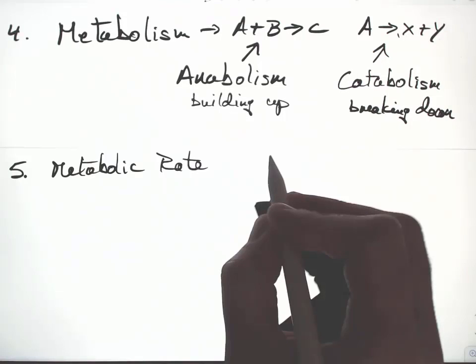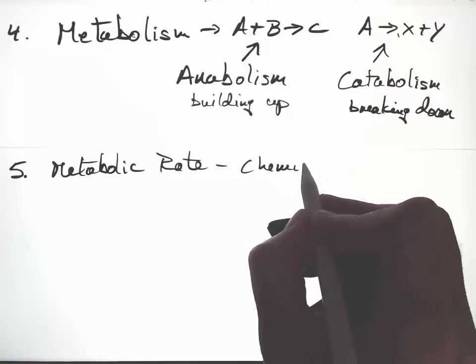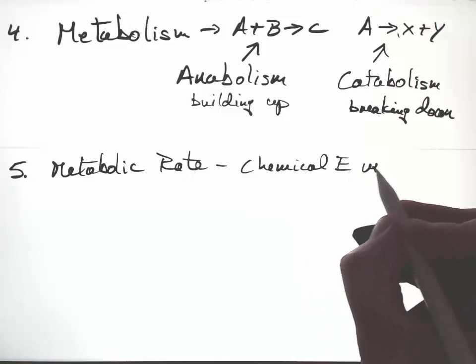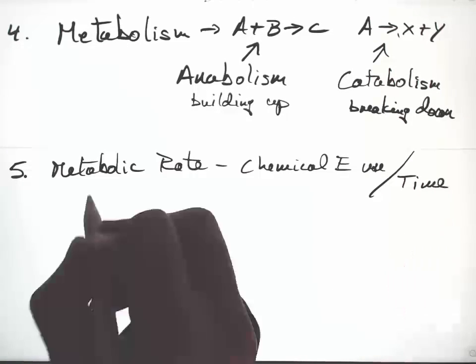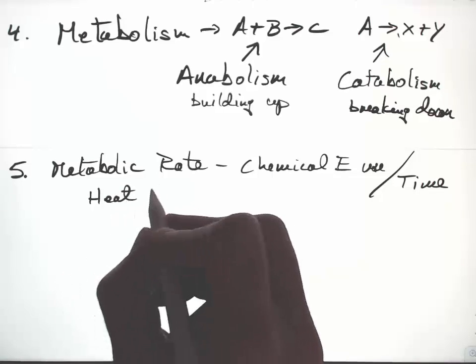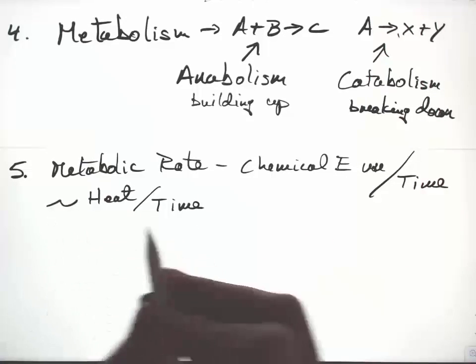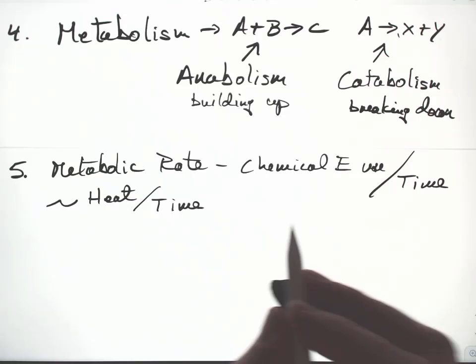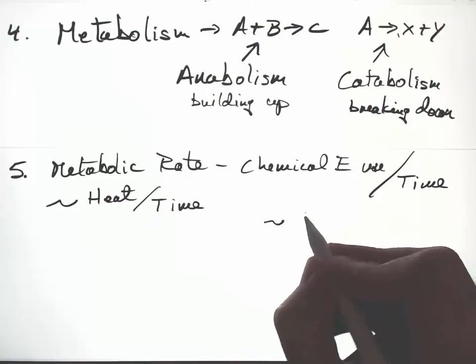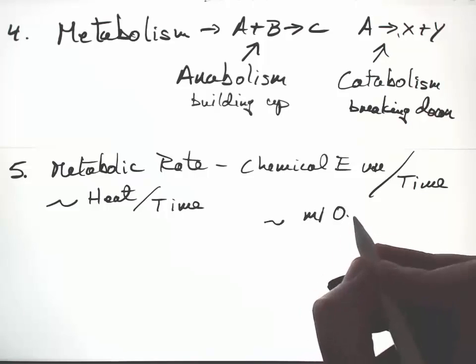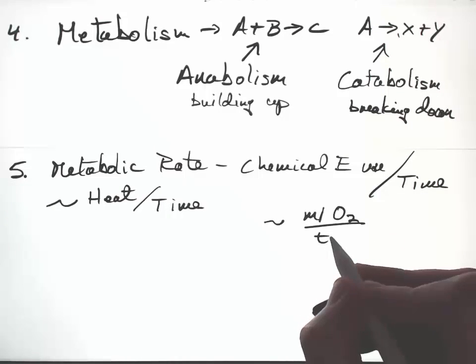Metabolic rate is the rate of energy use per unit time. That's roughly equivalent to the heat energy produced per unit time. For animals that are producing energy mostly aerobically using oxygen, that's also roughly equivalent to the milliliters of oxygen used per unit time.